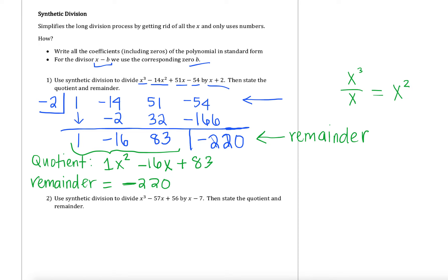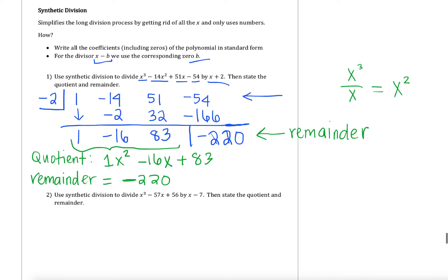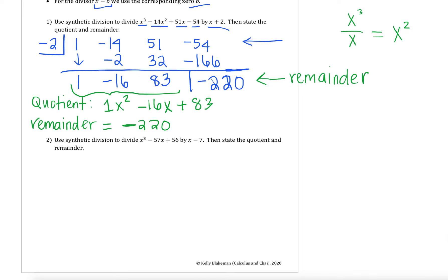Let's look at our next example. We're going to use synthetic division to divide x cubed minus 57x plus 56 by x minus 6, and again we want to state the quotient and the remainder. So we'll start the same process. The first thing I need to do is find my corresponding zero. For x minus 6, our corresponding zero is going to be positive 6. I'm going to put a little half box around it. Next, I'm going to list all of my coefficients. Why don't you guys pause the video and list out all of your coefficients for every single term.